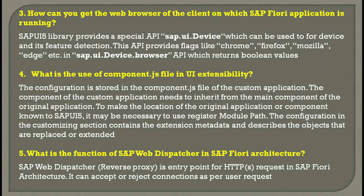The third question is: how do you get to know the different web browser options available for your SAP Fiori application? You would use the API sap.ui.device, which can be used for a whole range of devices and their detection. Another API, sap.ui.device.browser, provides boolean flags for specific browsers like Chrome, Firefox, Mozilla, or IE Edge — returning either true or false.